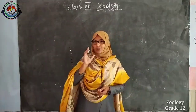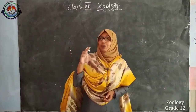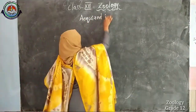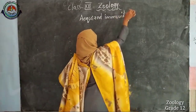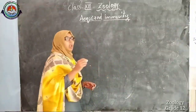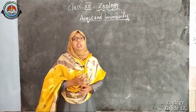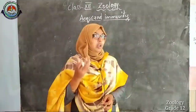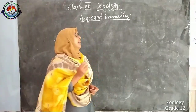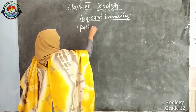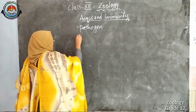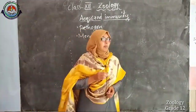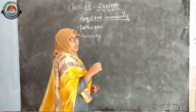Acquired immunity is pathogen specific. In the last class, we discussed that acquired immunity is the immunity that is acquired in our lifetime. It is pathogen specific and also characterized by memory.